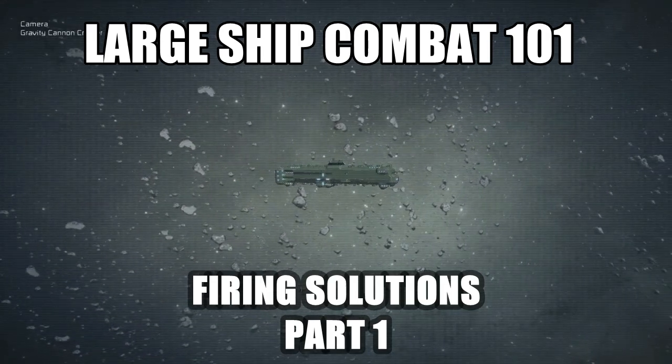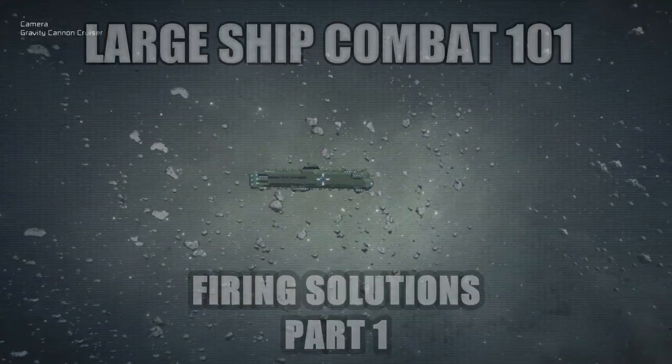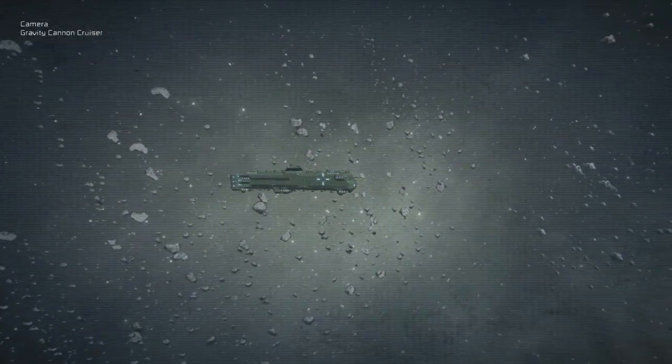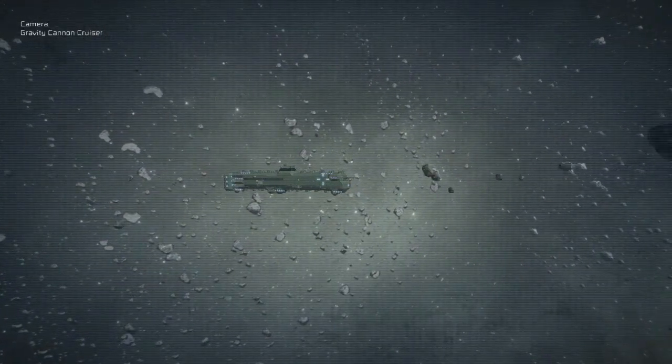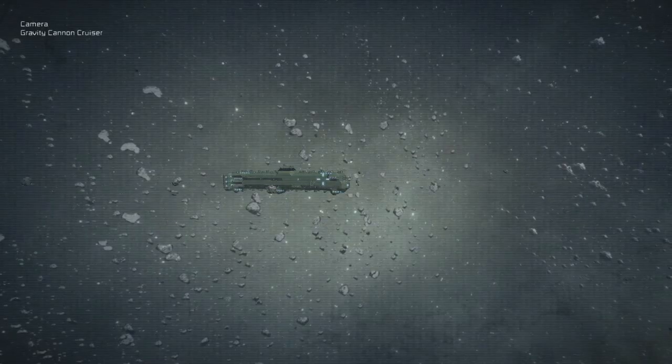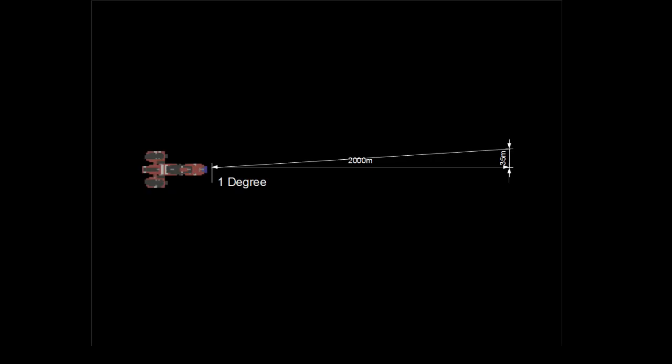Much of this series has been focused on weapon systems specifically designed to engage at over two kilometers. At two kilometers, a one degree difference in aiming amounts to 35 meters of deviation.